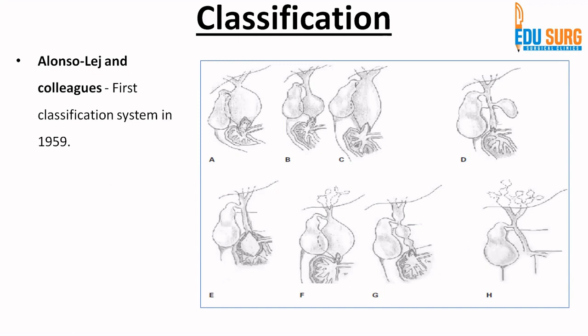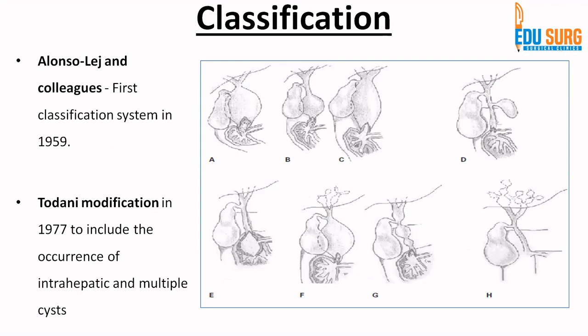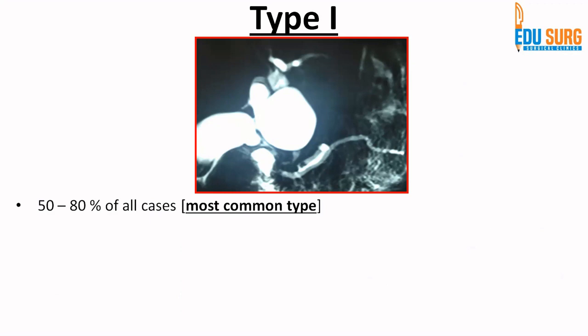The first classification of choledocal cysts was into three types, given by Alonso-Lej and colleagues in 1959. This was modified by Todani in 1977, which included intrahepatic involvement as well as multiple cysts. Currently, the classification is known as the Todani modification of the Alonso-Lej classification — a commonly asked question.